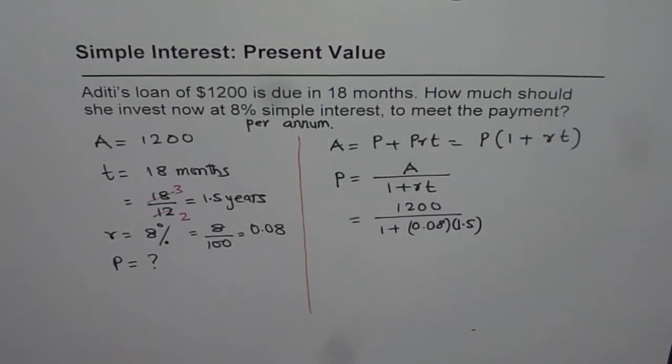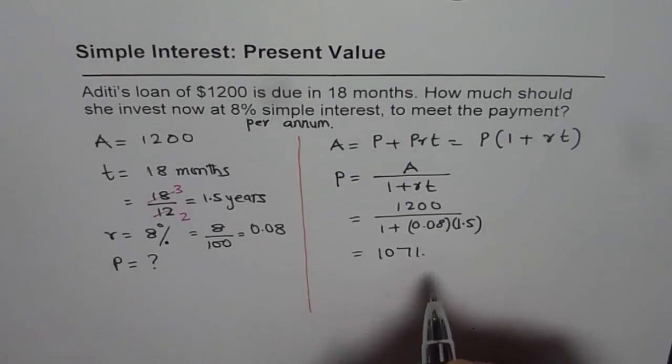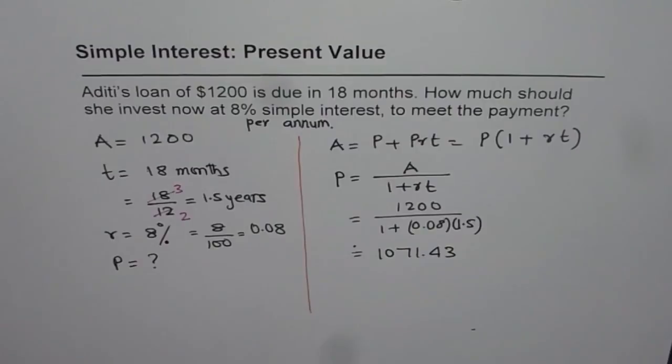So it is 1200 divided by, within brackets, 1 plus 0.08 times 1.5, bracket close, equals 1071.42. So that gives us 1071.43.